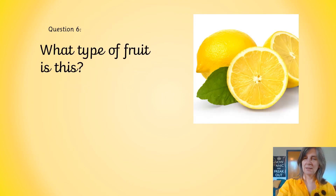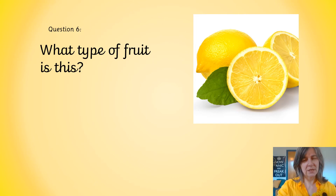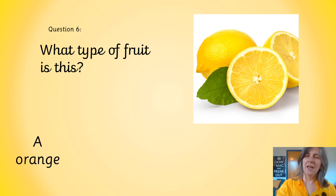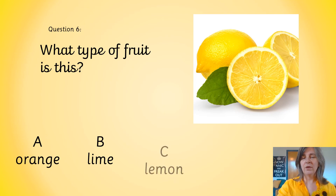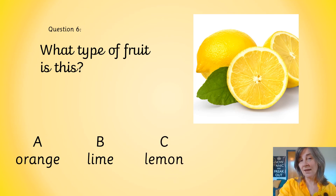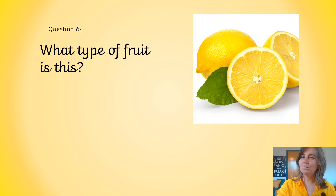Question 6. What type of fruit is this? Is it a, an orange? Is it b, a lime? Or is it a lemon? It's c, a lemon.